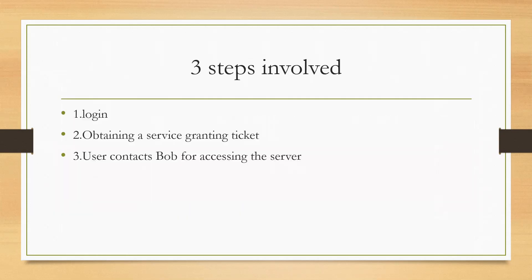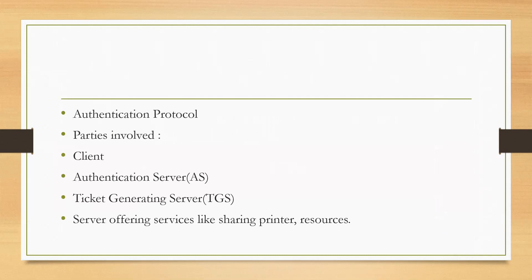In summary, the Kerberos protocol works under three steps and provides a secure session so that two parties can communicate with each other over insecure channels. Four parties are involved: the client machine, the authentication server, the ticket generating server, and the server machine offering services. The ticket generating server provides tokens to both client and server machines so they can be identified.